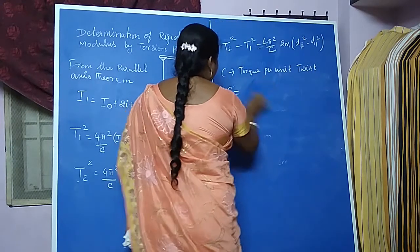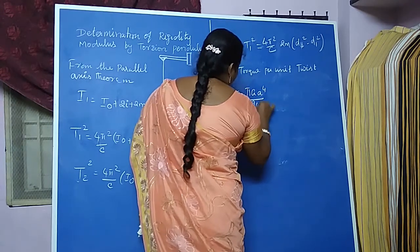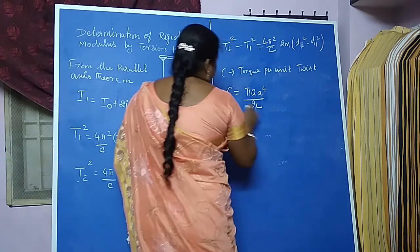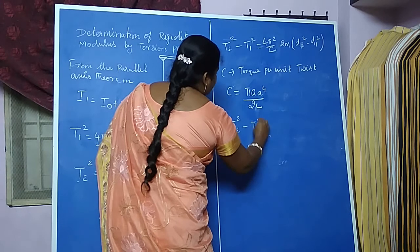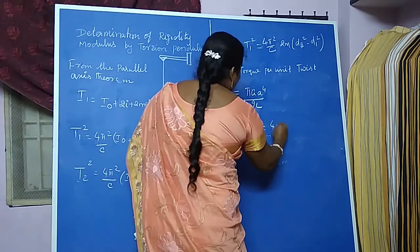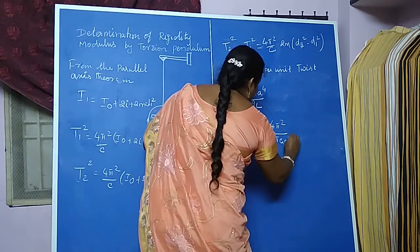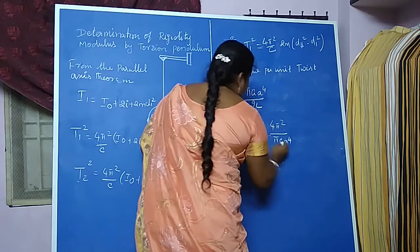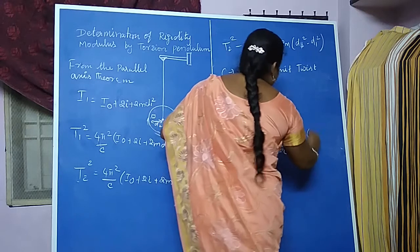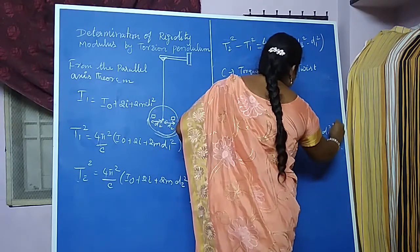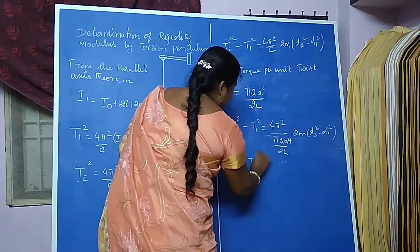Here, C is the torque per unit twist. Substituting the value C equal to πga⁴ divided by 2L, we get T2 squared minus T1 squared equal to 4π² divided by (πga⁴ divided by 2L), multiplied by 2m into (D2 squared minus D1 squared).